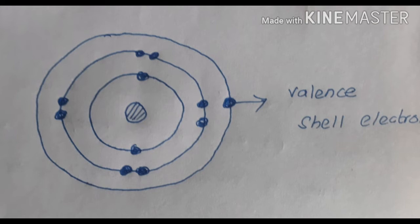I am going to explain what is a valence shell electron. The outermost shell — it may be the third shell, it may be the fourth shell — whatever shell is in the outermost part, the electrons present in that shell are called valence shell electrons. Here, there is only one blue dot, so the valence shell electron for the given diagram is one.